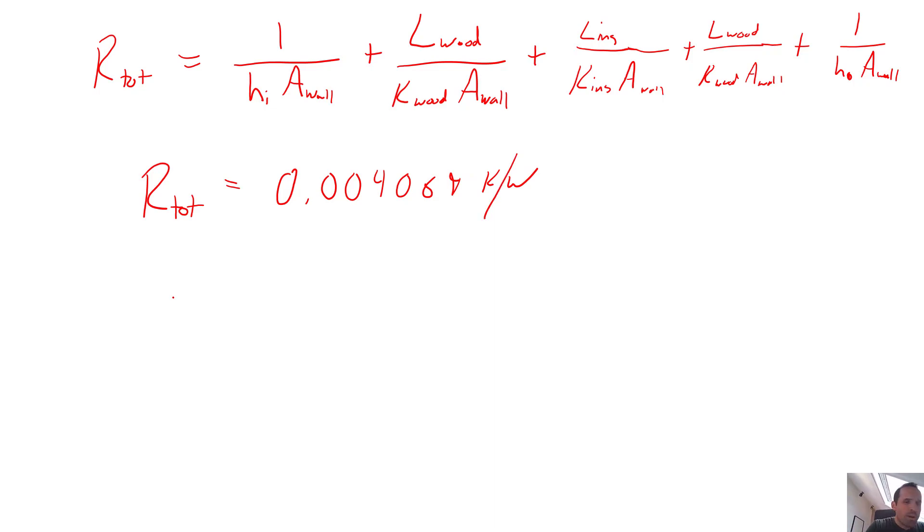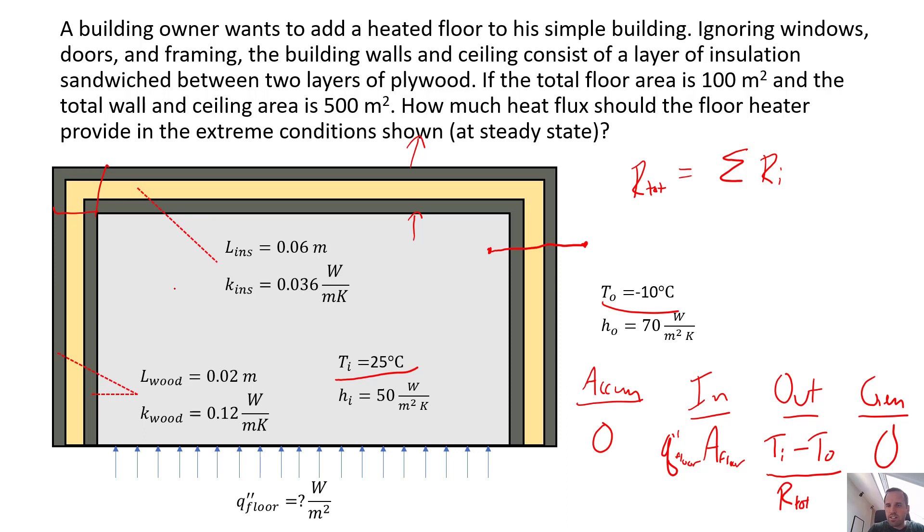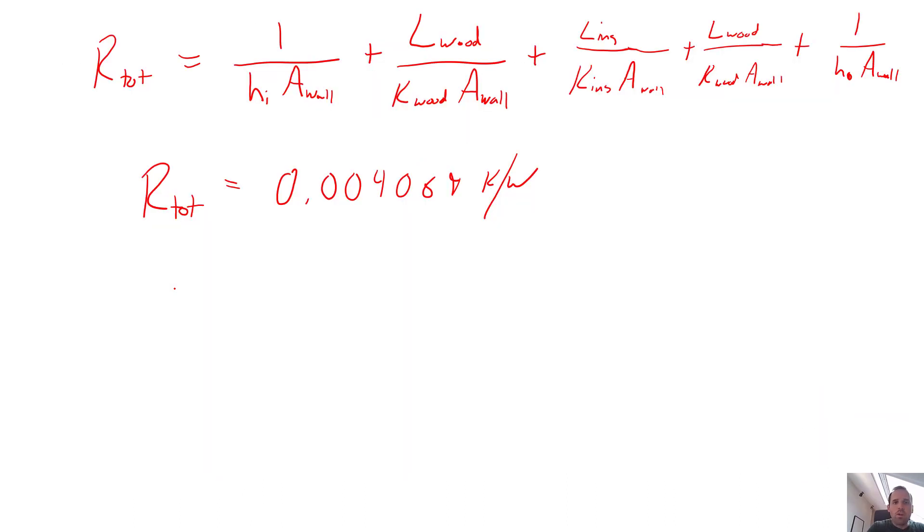So back to our energy balance. When we compiled our energy balance, so let's go here, we get that accumulation equals in, which is that Q double dot floor times the floor area, I hope I said floor area, yep, minus our out term, which is just going to be T_i minus T_o divided by the sum of our five thermal resistances, which we can just do separately. So now it's just a matter of solving for what the design parameter that we want.